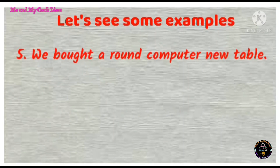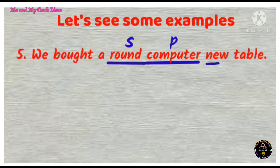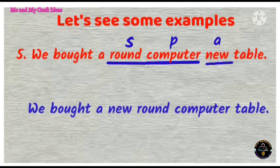We bought a round computer new table. In this sentence, round is shape, computer is purpose, and new is age. So the correct adjective order is: we bought a new round computer table.